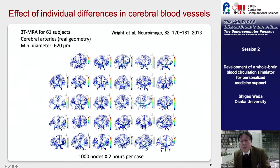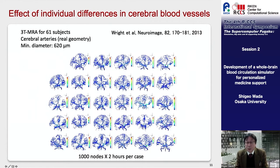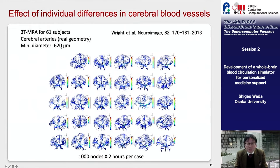Next, I would like to introduce the individual differences in cerebral blood flow. Licht et al. published data of major cerebral arteries extracted from MRI images of 61 subjects. The minimum vessel diameter in the data is 620 micrometers. We constructed a real configuration model of the cerebral arteries from this data and analyzed the blood flow.